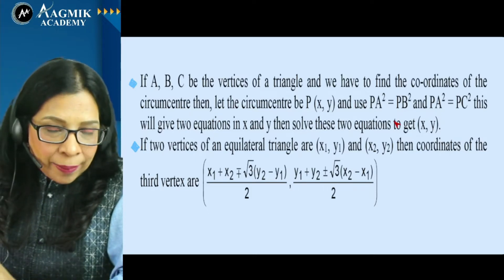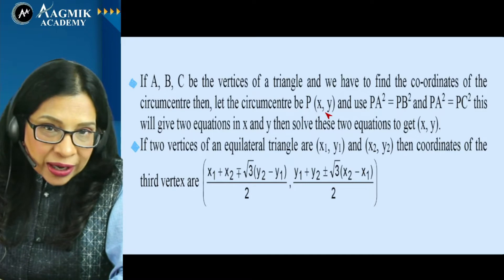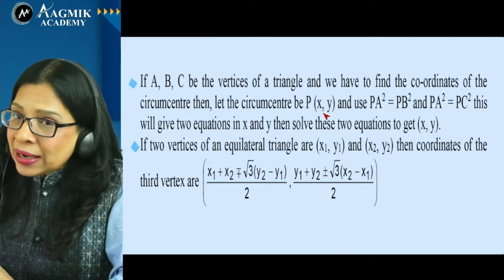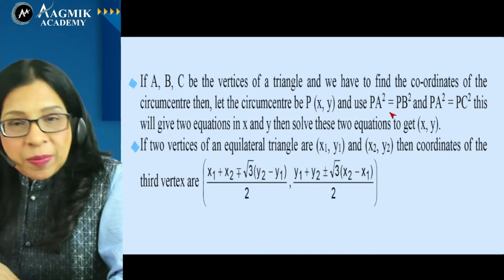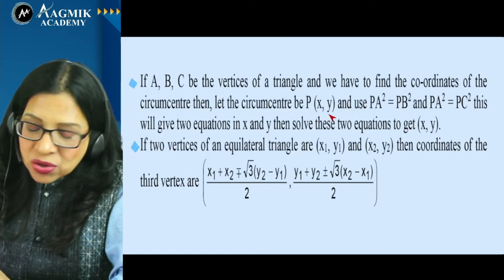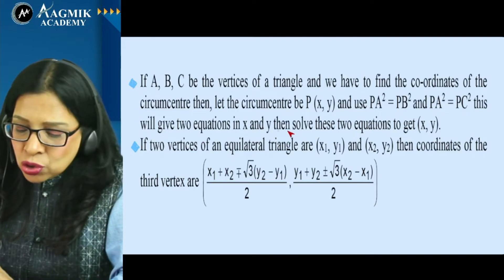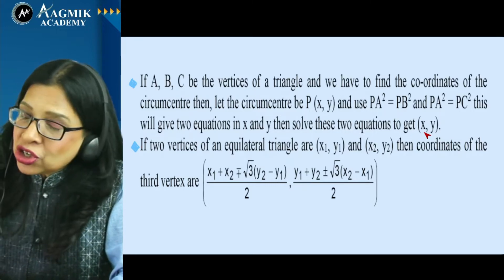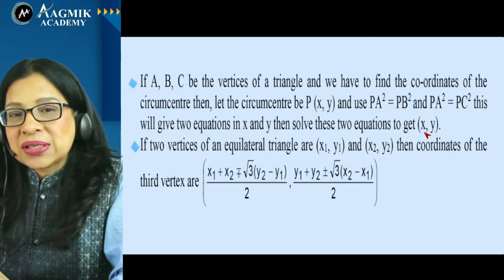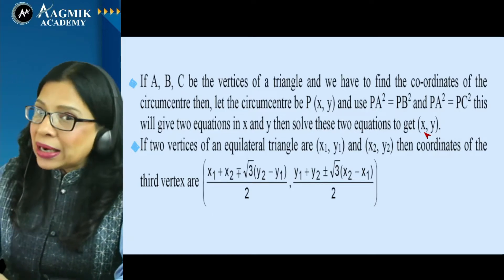The circumcenter is equidistant from the three vertices because it is the center of the circumcircle. To find its coordinates, assume them as (x, y) and use the result that OA = OB = OC. For an equilateral triangle, all three sides are equal. If you are given two vertices of an equilateral triangle and need the third vertex, assume coordinates and use the equal-sides relation.